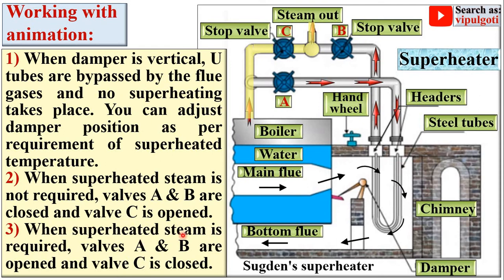When superheated steam is required, valves A and B are open and valve C is closed. The wet steam flows through valve A, then passes through the U-tubes where it is converted into superheated steam, and then it is discharged to the steam turbine.